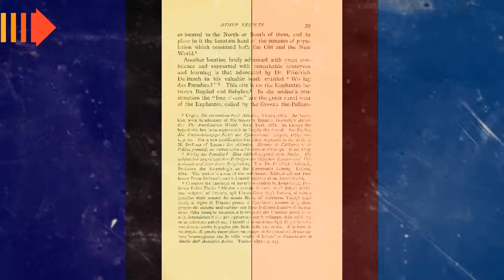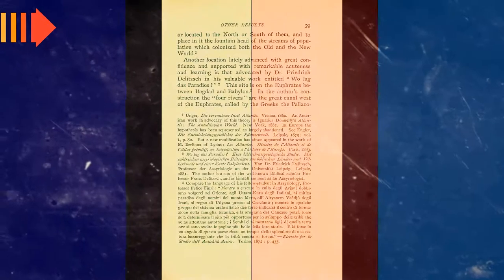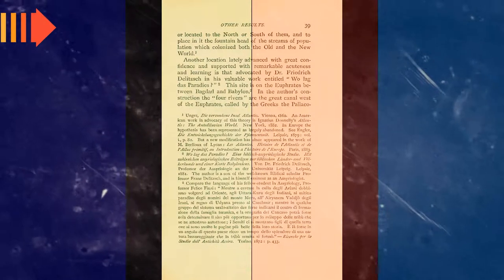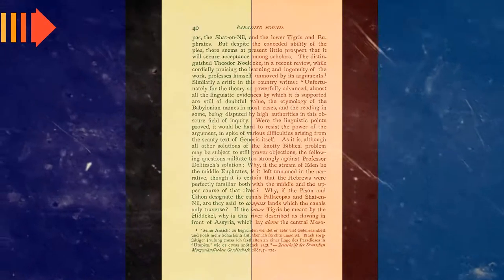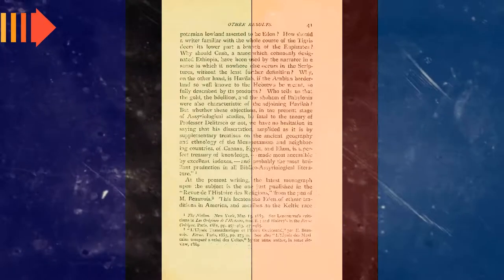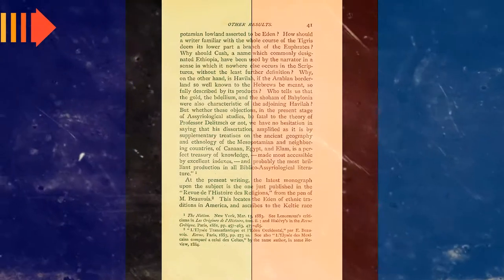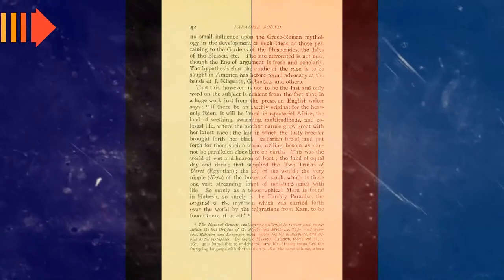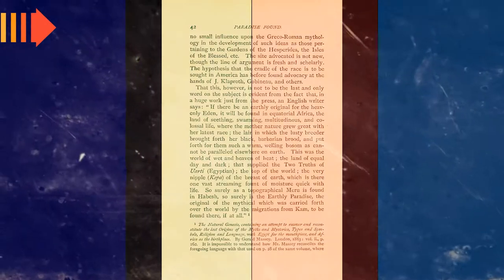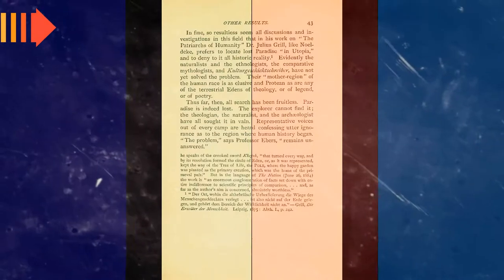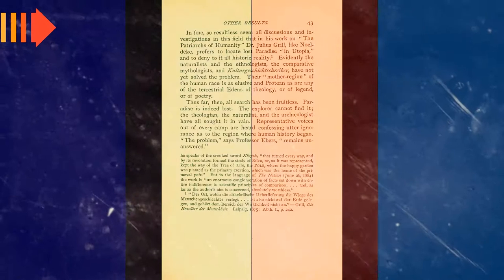Atlantis, ancient Greek Atlantis Nesos, island of Atlas, is a fictional island mentioned in an allegory on the hubris of nations in Plato's works Timaeus and Critias, wherein it represents the antagonist naval power that besieges ancient Athens, the pseudo-historic embodiment of Plato's ideal state in the Republic.